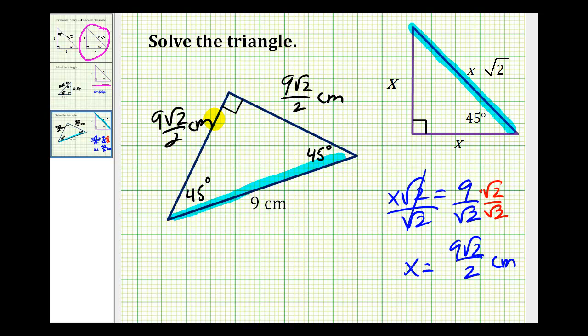So again, the key is matching up the given information with the correct side of our 45-45-90 reference triangle. And then once we determine x, we can determine the length of any of the other sides.